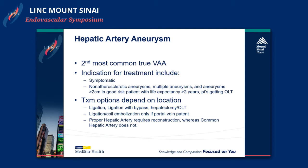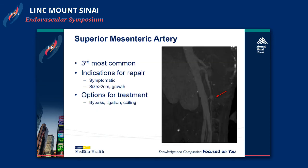Hepatic artery aneurysm is the second most common type. Indications for treatment include symptomatic aneurysms, non-atherosclerotic aneurysms, multiple aneurysms, and aneurysms greater than 2 centimeters in a good risk patient with life expectancy greater than two years, or someone undergoing a liver transplant. Treatment options are similar: you can ligate, ligate with bypass, hepatectomy, or liver transplant. You should ligate or coil only if the portal vein is patent. The proper hepatic artery does require reconstruction, whereas the common hepatic does not, because if you have a good GDA you should be able to tolerate ligation of the common hepatic artery.